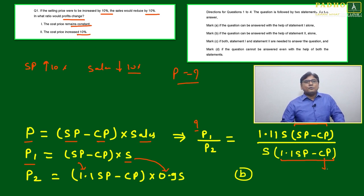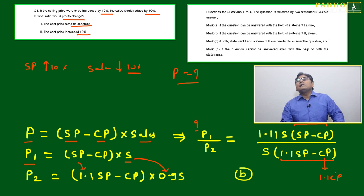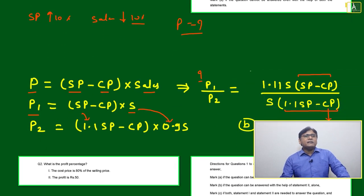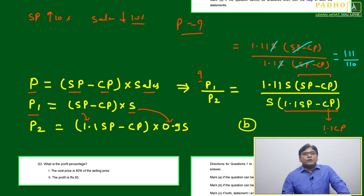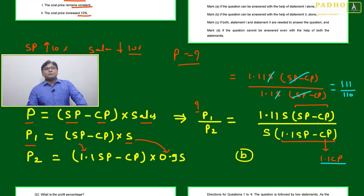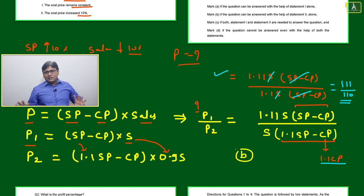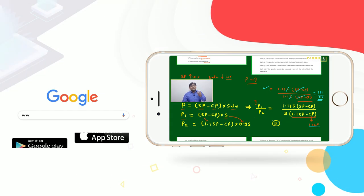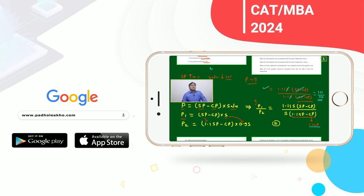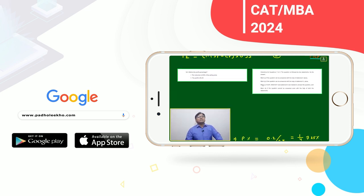For Statement 2, cost price increases by 10%, so CP becomes 1.1 CP. Substituting into P2: (1.1 SP - 1.1 CP) × 0.9S = 1.1(SP - CP) × 0.9S. Now 1.1 appears in both numerator and denominator, so the ratio P1/P2 can be calculated. Since this is a data sufficiency question, we only need to confirm a unique solution exists. Statement 2 is sufficient, so the answer is option B.